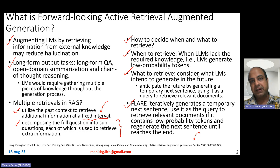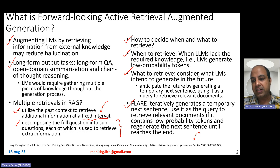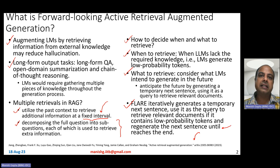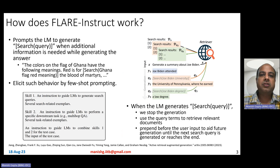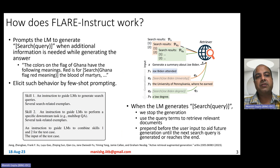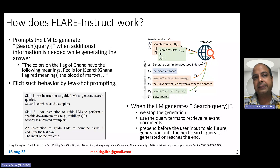That is where FLARE comes into picture. FLARE iteratively generates a temporary next sentence, uses it as a query to retrieve relevant documents if it contains low probability tokens, and then regenerates the next sentence until it reaches the end of the overall output generation. FLARE works in two modes: the first one is called FLARE Instruct, and the second one we will discuss on the next slide.